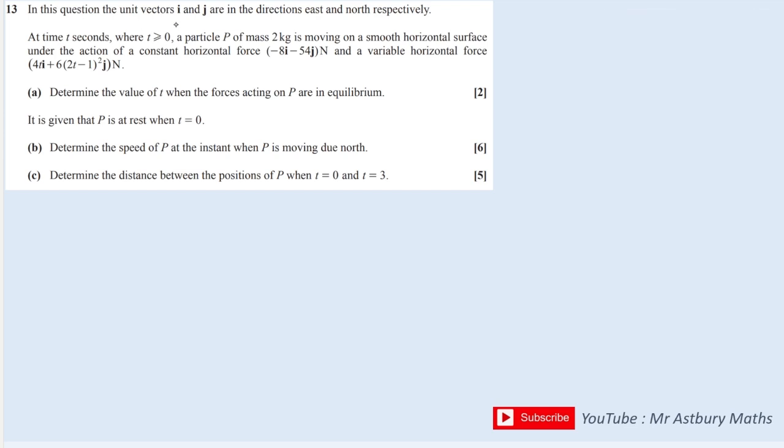We have i and j east and north as you would expect, and it says T greater than zero. A particle of mass 2 kg is moving on a smooth horizontal surface under the action of a constant force and a variable force. Determine the value of T when the forces acting on P are in equilibrium.